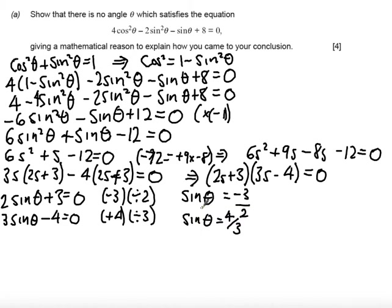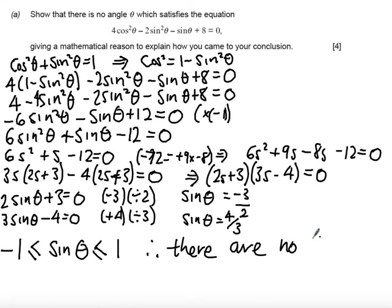The reason we can't get a solution here is that the function sinθ lies between -1 and 1. Sinθ never gets any smaller than -1, and -3/2 is smaller than that. It also never gets bigger than 1, and 4/3 is bigger than 1. So there are no solutions for theta.